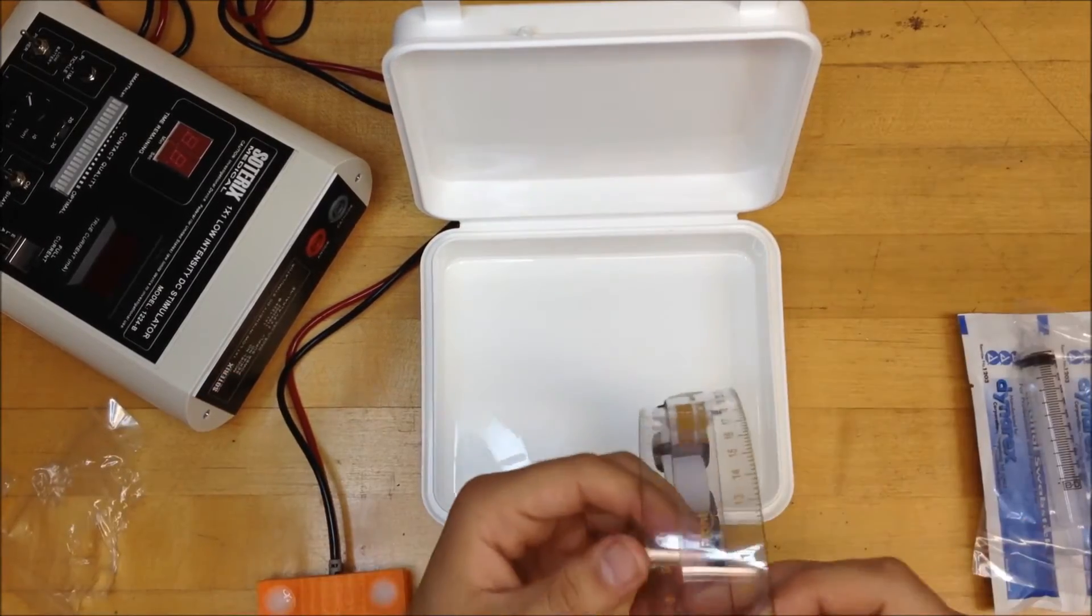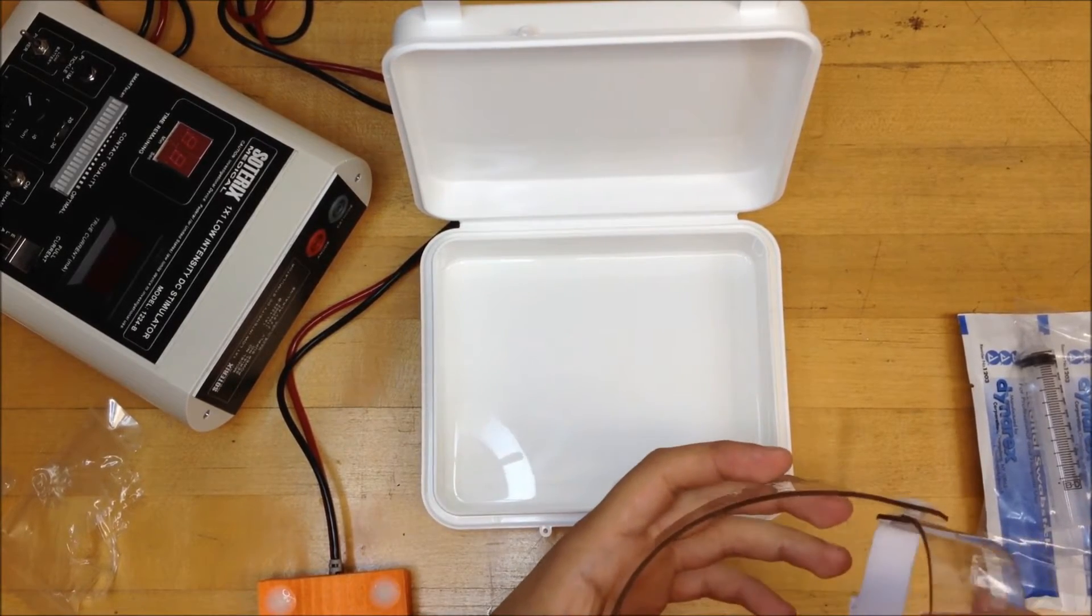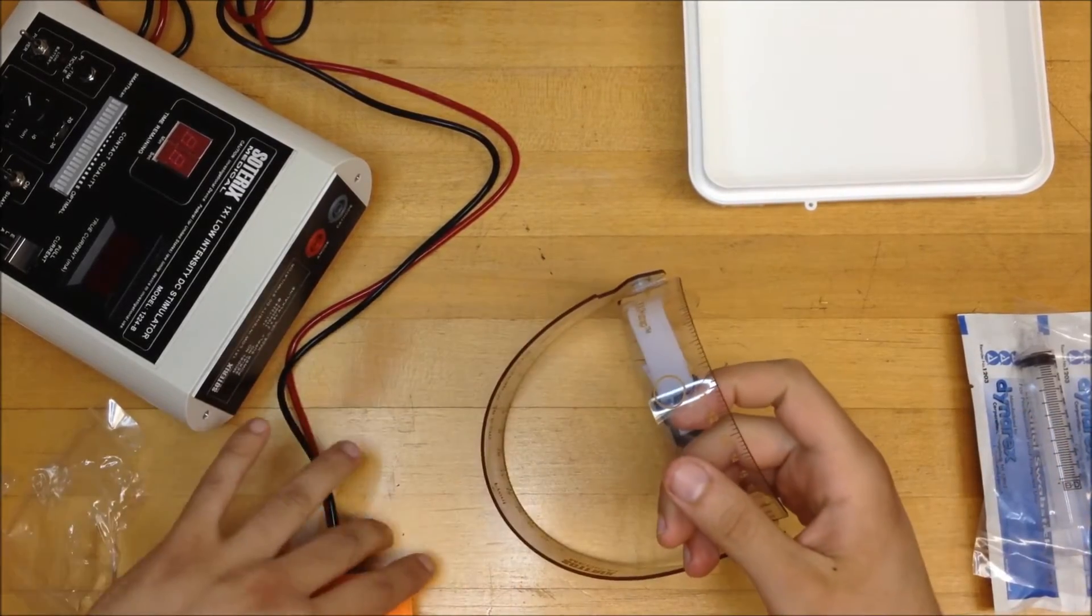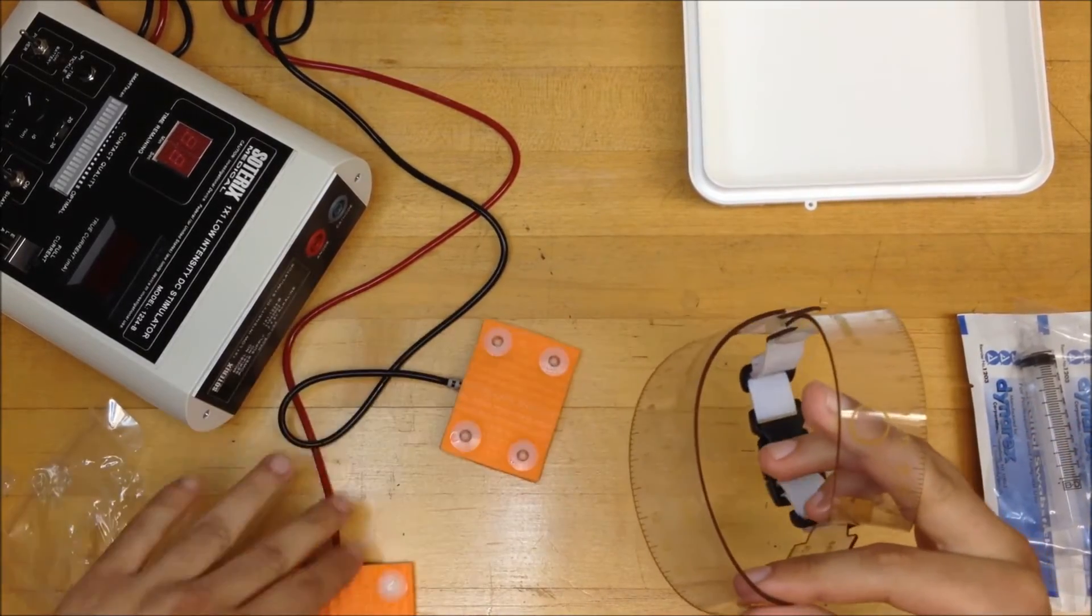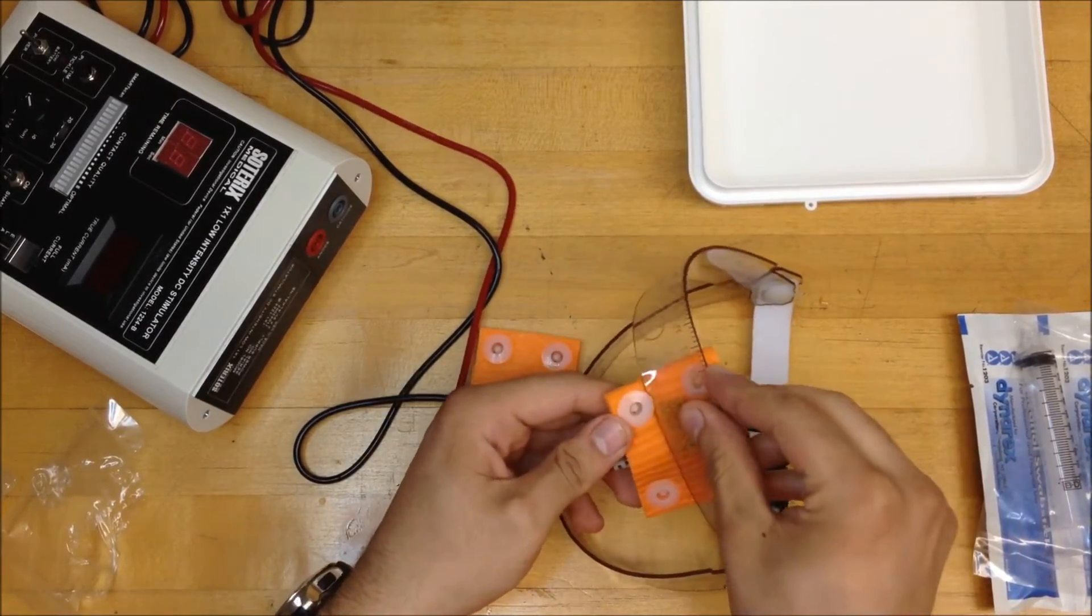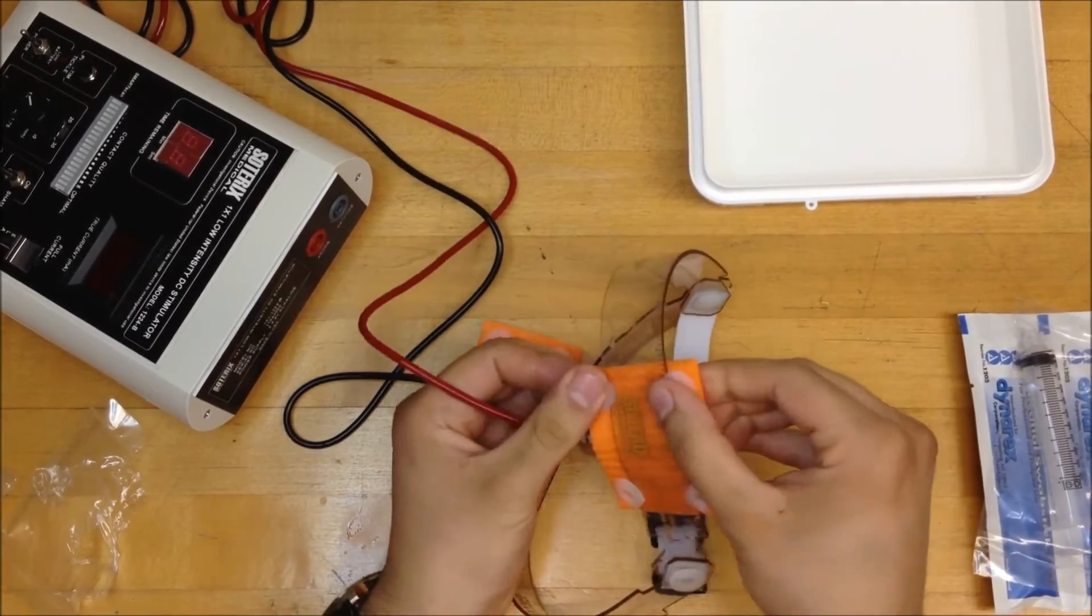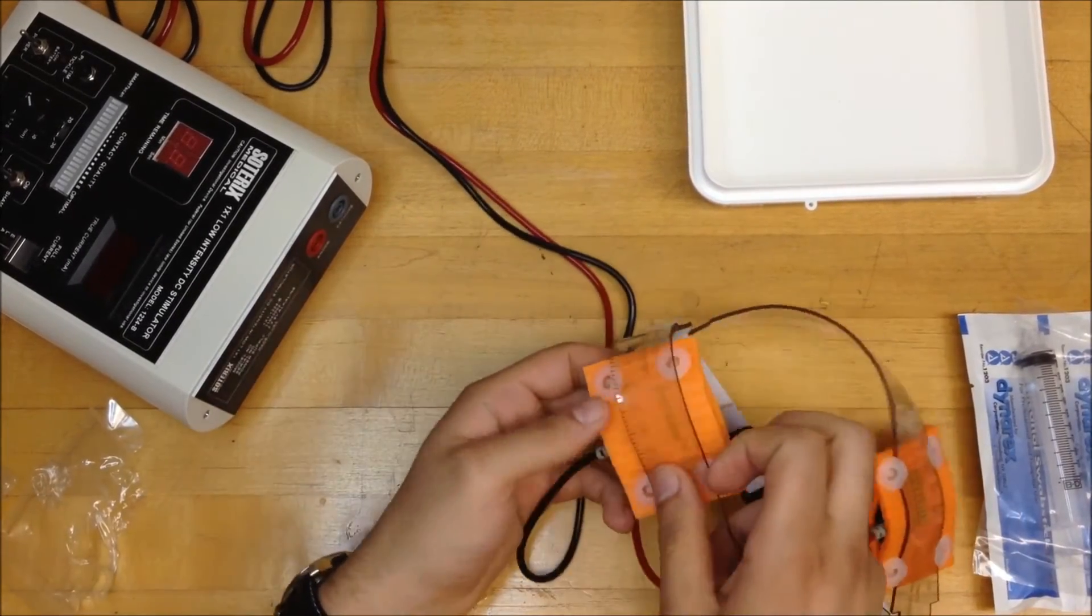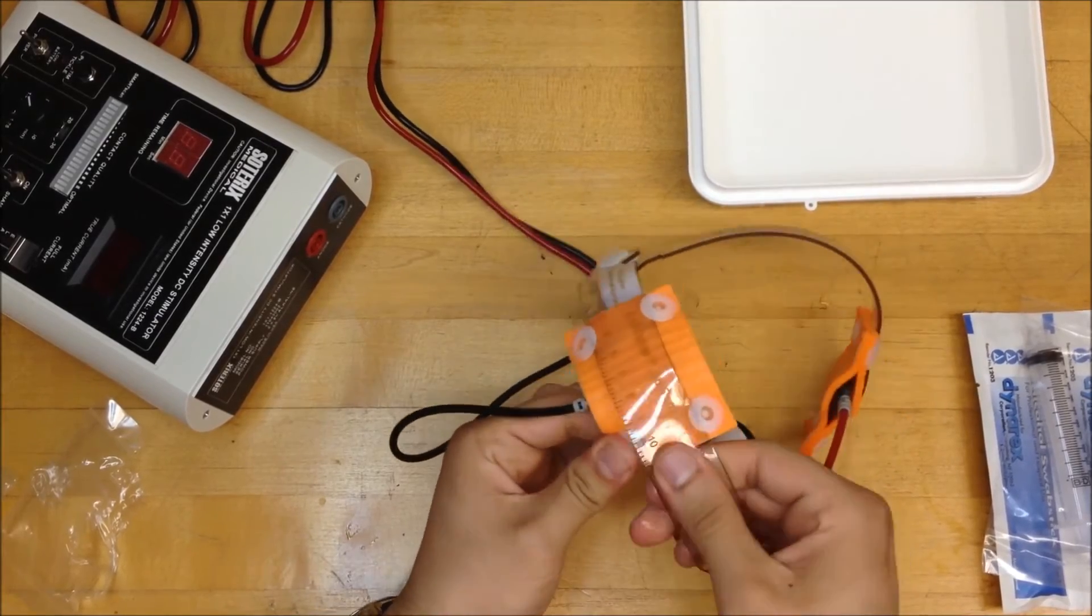Now if you have the Soterix Medical Easy Strap, which is another very cool addition to their product line, you can easily fix the Easy Pads on the Easy Strap and begin your stimulation. So the way it's meant to be is that the dented side of the rivet goes on top of the Easy Strap.